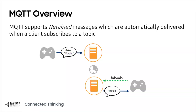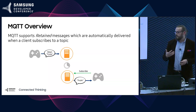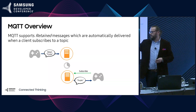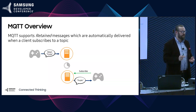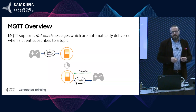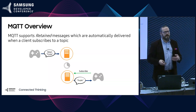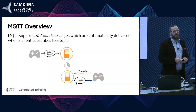MQTT also supports a retained message, which is what I was mentioning before about using it as a key-value store. Basically, it's a single message per topic that is distributed automatically when someone subscribes to a topic for the first time. If you stay subscribed to the topic, any changes to that retained message will be automatically pushed to you with a flag to indicate it's a retained message being changed. This gives you an automatic way to track device state over time without having to poll continuously, reducing load on central key-value stores.